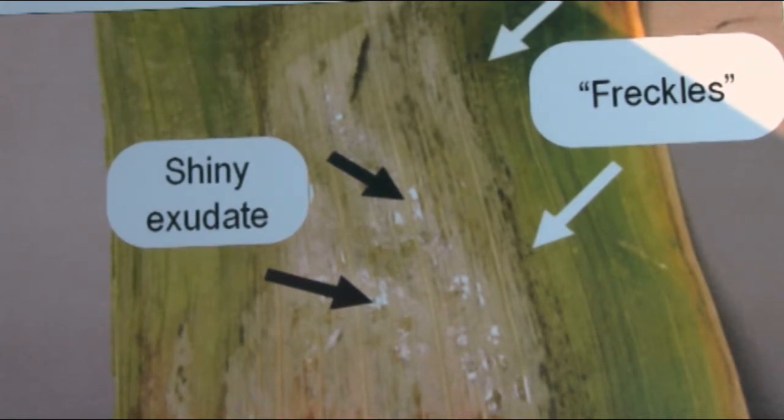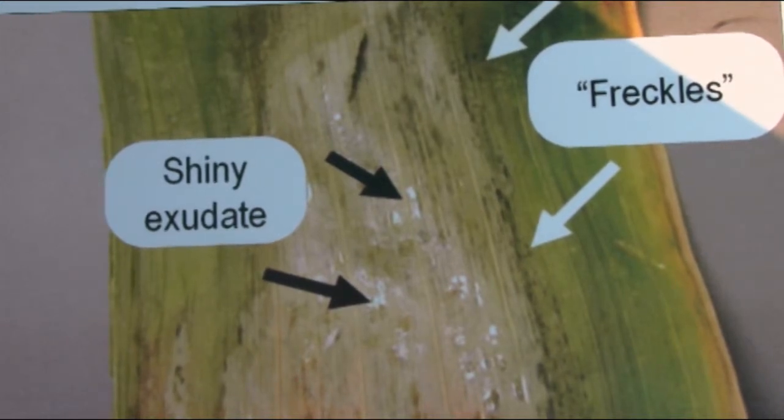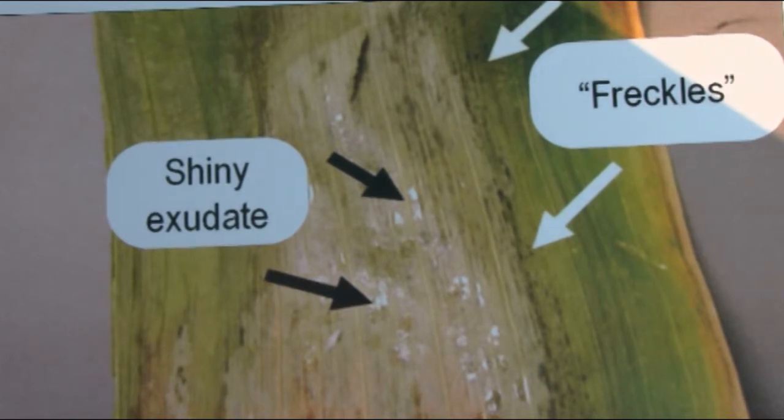Fungicides may help the plant be a little healthier at the time of application, but they will not have any counter action against bacterial leaf diseases. In conclusion, we discussed the symptomology and management tools against northern corn leaf blight, gray leaf spot, and Goss's bacterial wilt.